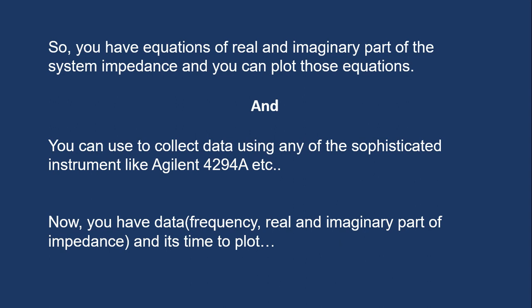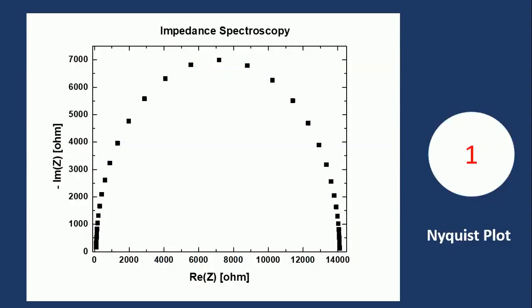You can then plot that impedance spectroscopy data. Here I have plotted the real part of impedance along the x-axis and the imaginary part along the y-axis, where each data point corresponds to one frequency. You can observe that the graph looks like a semicircle, and the maximum value of the imaginary part — around 7,000 — corresponds to a real part value also around 7,000. This plot is called the Nyquist plot of the impedance spectroscopy data.